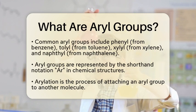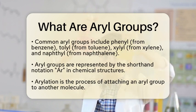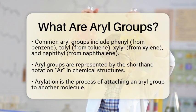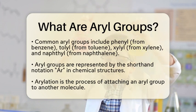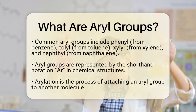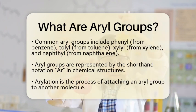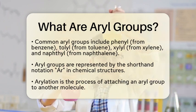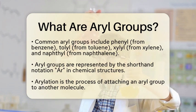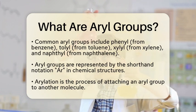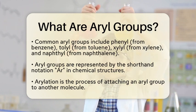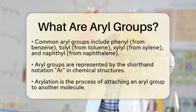Let's look at some common examples. The phenyl group, which is derived from benzene, is one of the most well-known aryl groups. Then there is tolyl, which comes from toluene, also known as methylbenzene. Another example is xylyl, which is derived from xylene, a compound with two methyl groups attached to a benzene ring. Lastly, we have naphthyl, which comes from naphthalene, a compound made up of fused benzene rings.